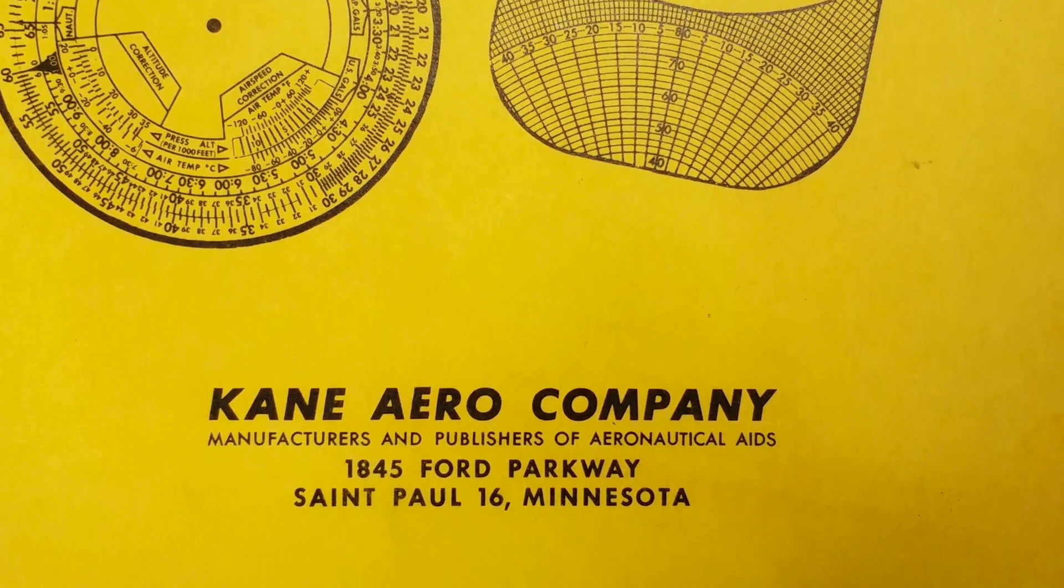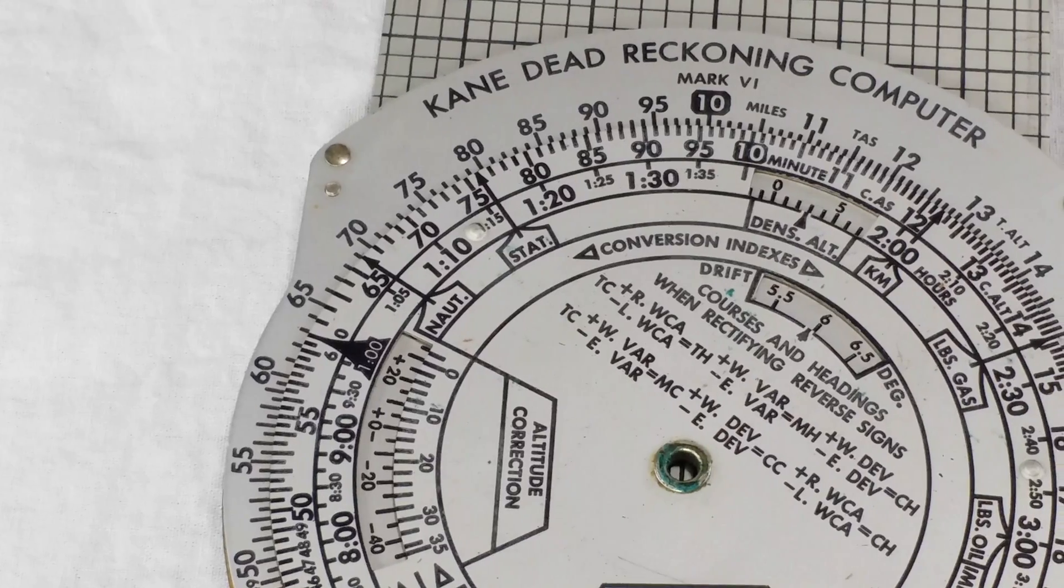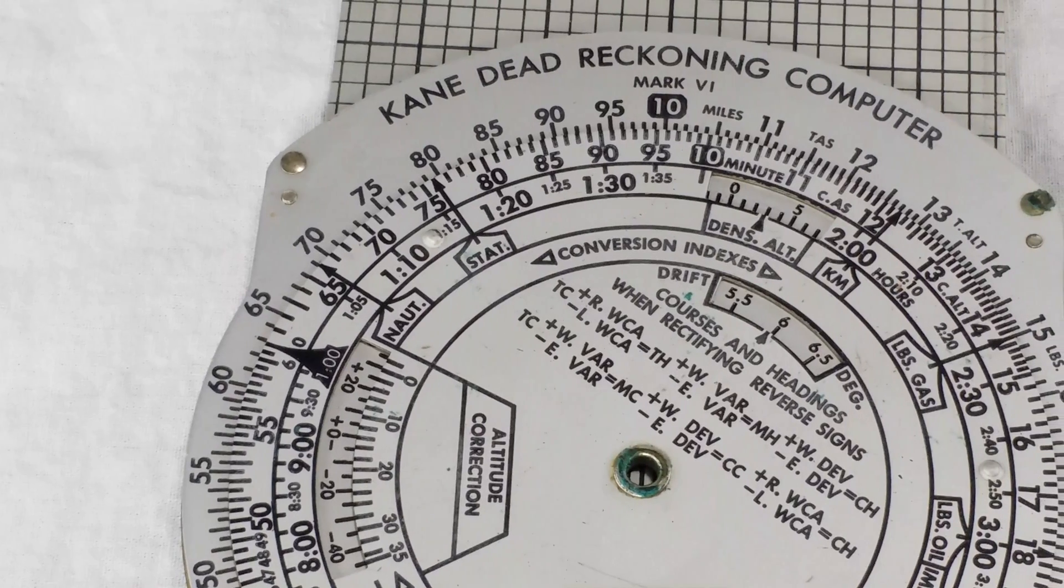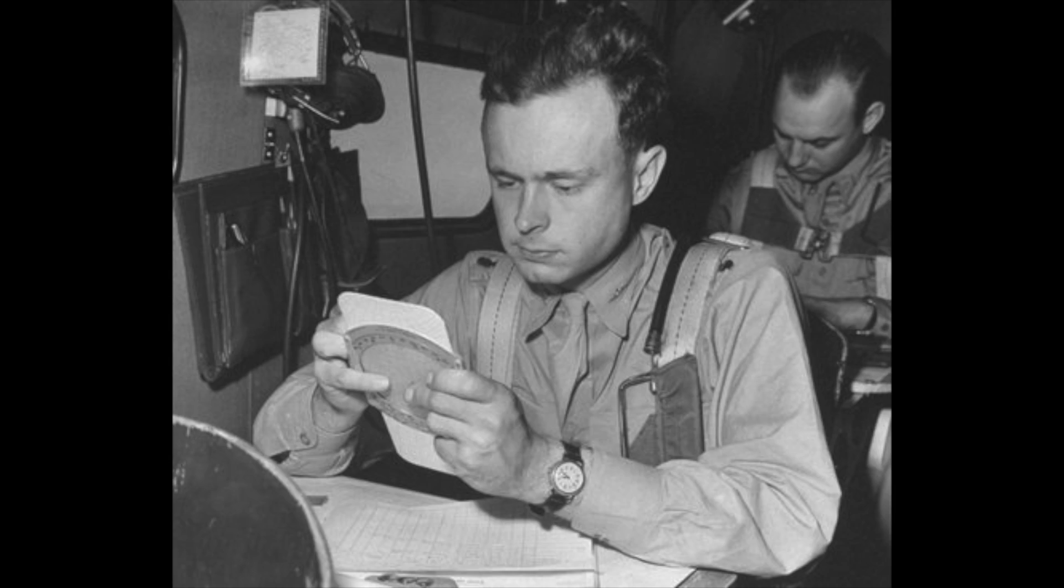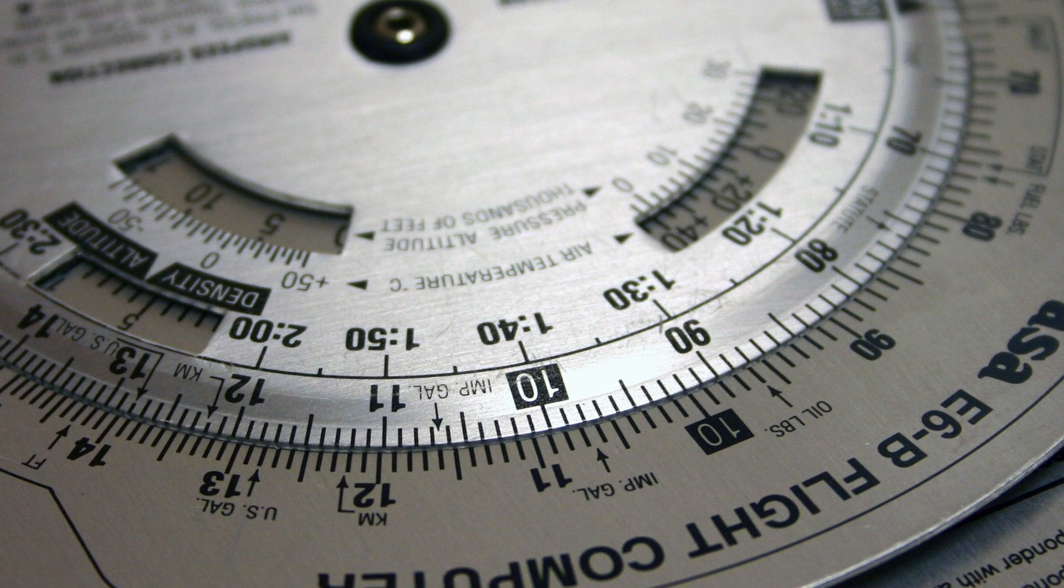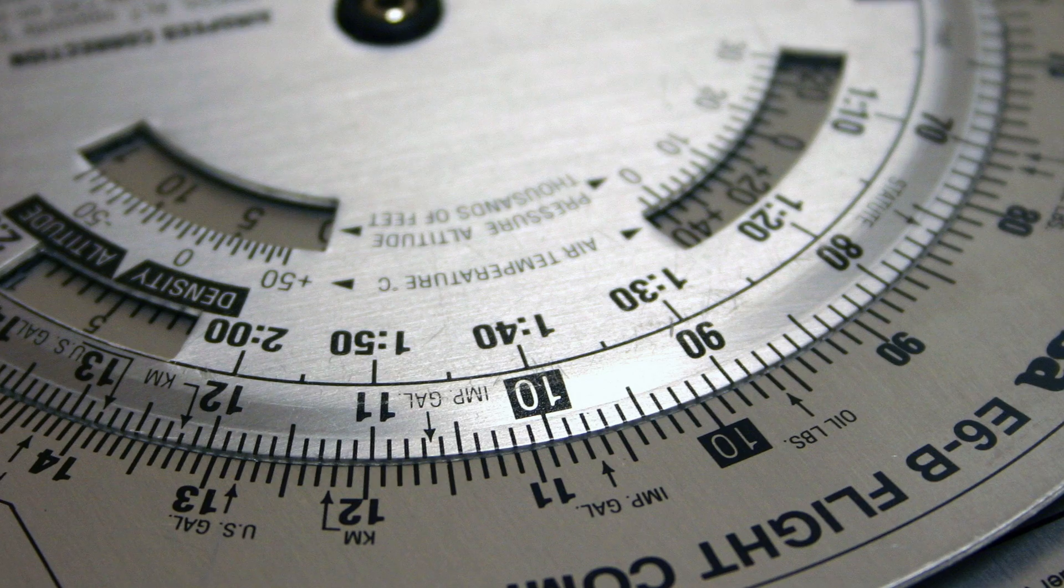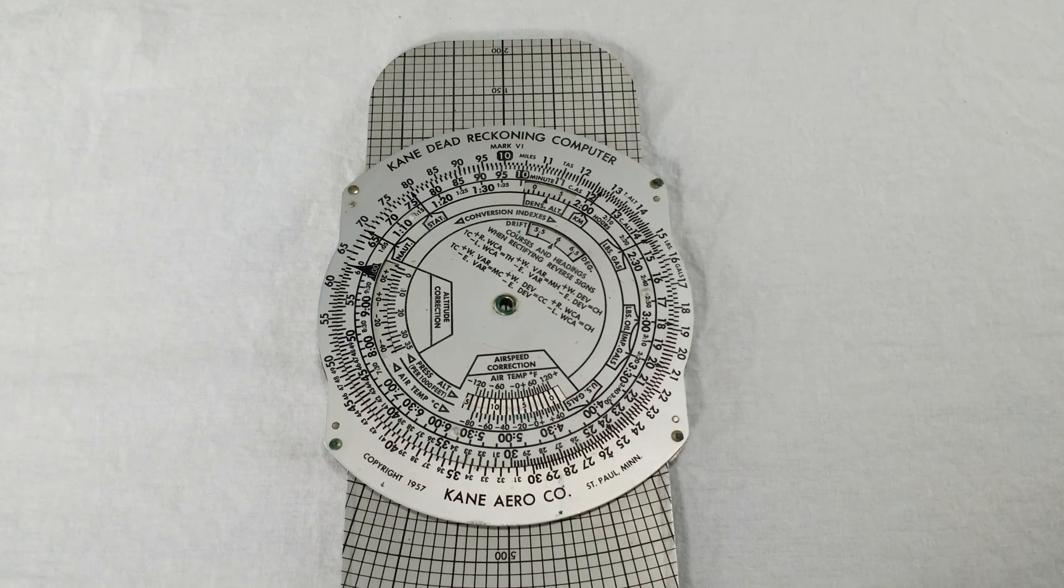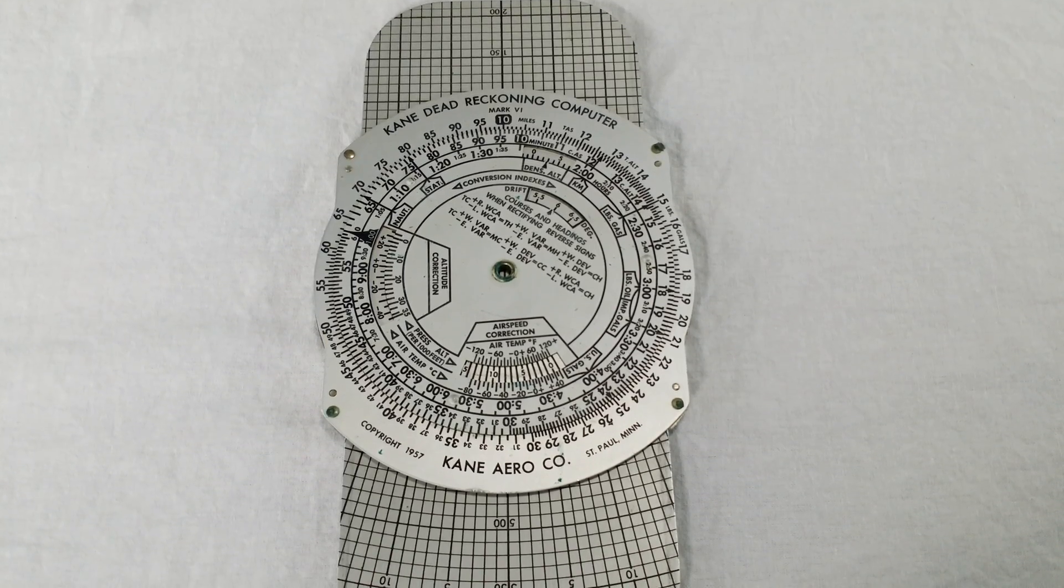I couldn't really find any information about the Kane Aero Company, but this device is just one among many knockoffs of the U.S. Air Force's E-6B flight computer. The E-6B was invented in the 1930s by Army scientist Philip Dalton. After the Pearl Harbor attack, the U.S. military got serious about air navigation and went all in on the E-6B. They manufactured about 400,000 of these things and they trained every military pilot to use one.